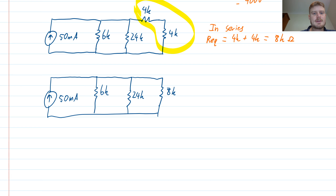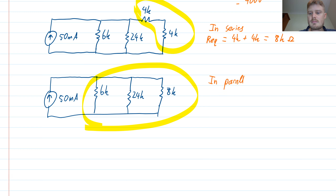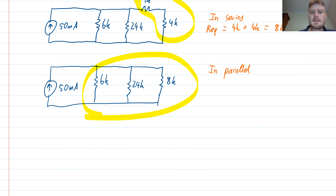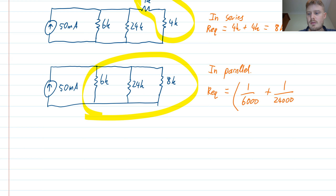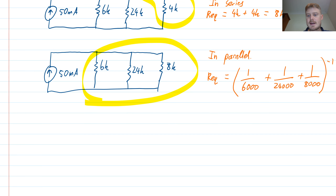What's the pattern we recognize now? Three resistors connected in parallel. I know the equivalent resistance is 1 over 6,000 plus 1 over 24,000 plus 1 over 8,000, all to the power of minus 1. I get my calculator, multiply all of that out, and the answer is 3 kilo ohms — 3,000 ohms.